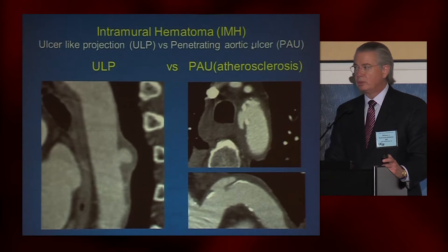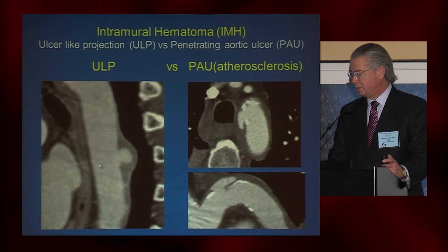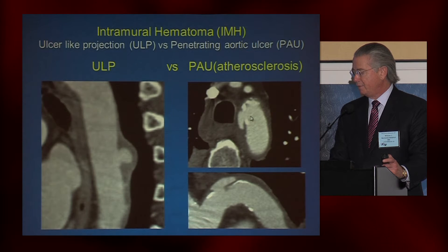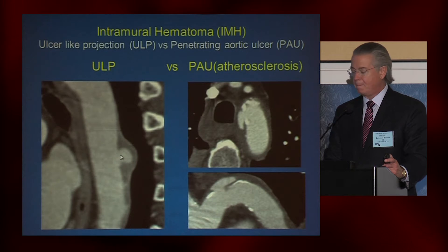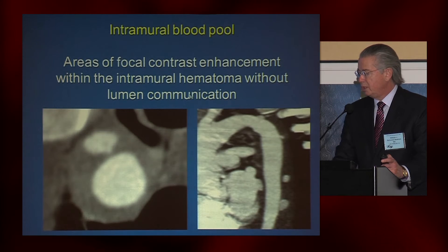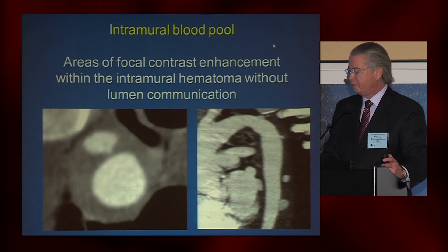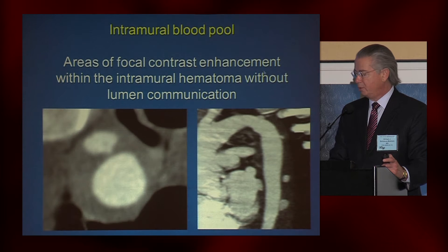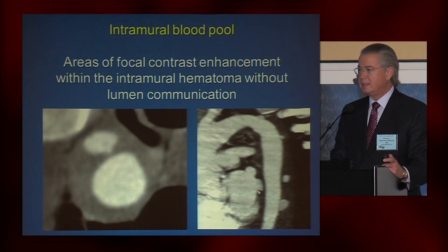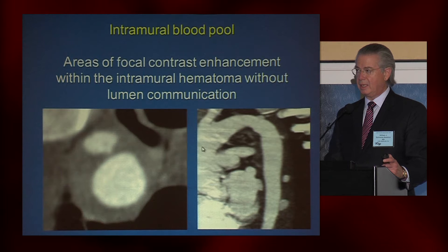On follow-up CT scans, look for ulcer-like projections, which appear similar to a penetrating ulcer. The difference is that penetrating ulcers typically have accompanying plaque, whereas in intramural hematoma there is no plaque. You can also see what's called an intramural blood pool — areas of focal contrast enhancement within the intramural hematoma without luminal communication. You can see examples of a couple of blood pools on the CT scan.